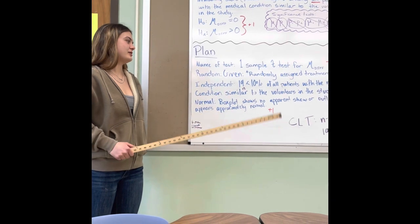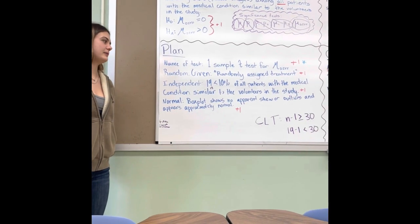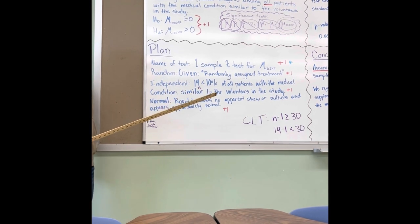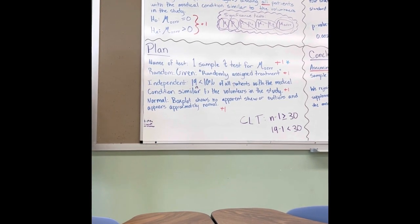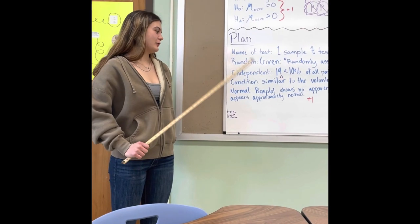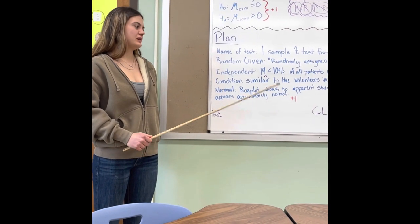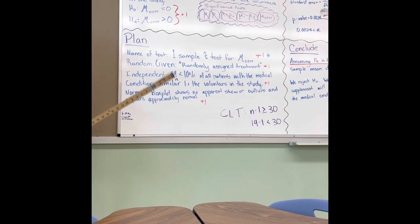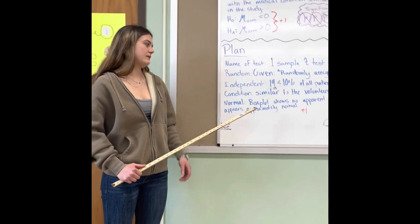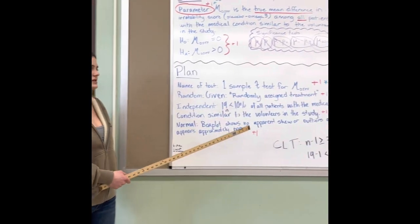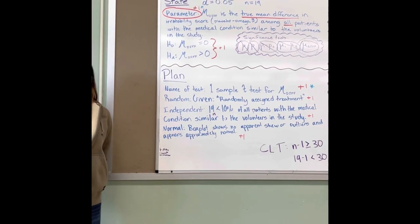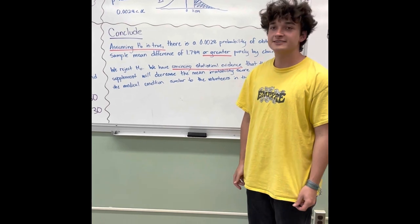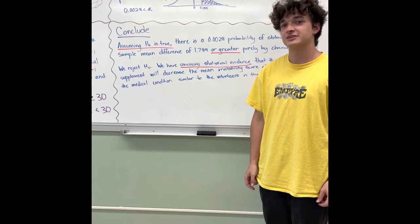Next is the independence condition, which requires n to be less than 10% of the population. Our n is 19, and 19 is less than 10% of all patients with medical conditions similar to the volunteers in this study. We also need to prove normality. Usually we use the CLT, which requires n minus 1 to be greater than or equal to 30, but 19 minus 1 is less than 30, so that doesn't work. However, they gave us a box plot which shows no apparent skew or outliers and appears normal, which proves that the normality condition is met.